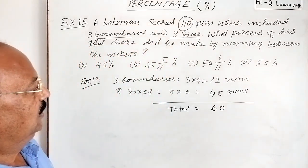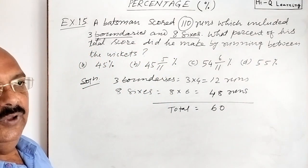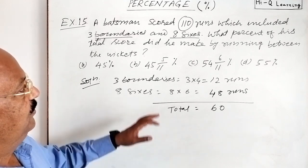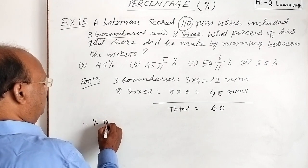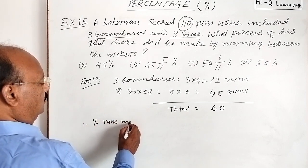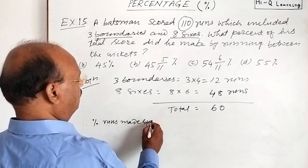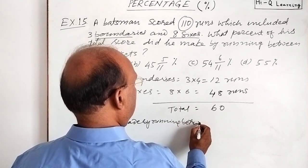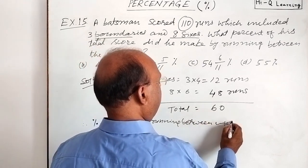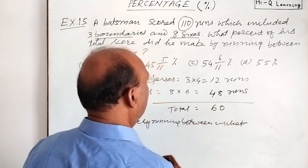Now we have to find out percentage run made by running between 2 wickets. Therefore, percentage runs made by running between 2 wickets will be how much?